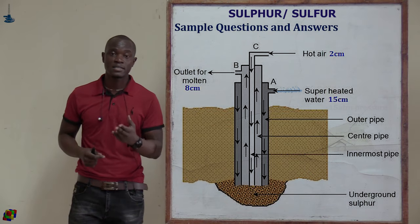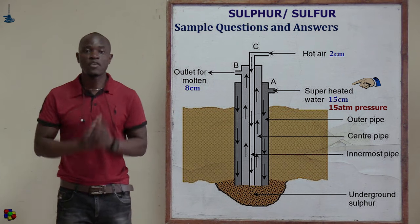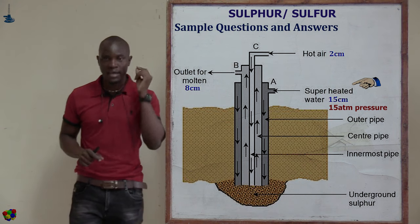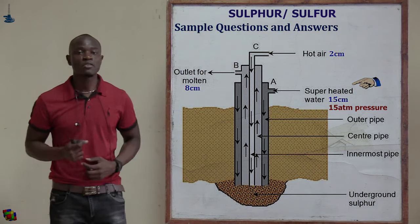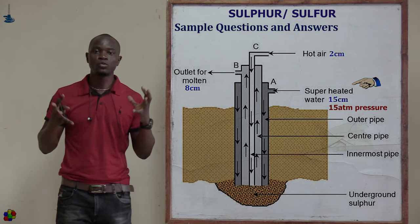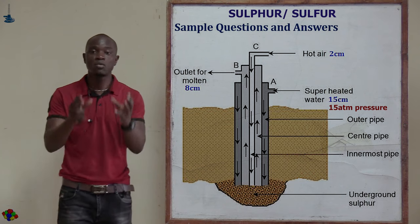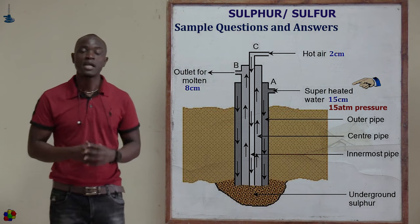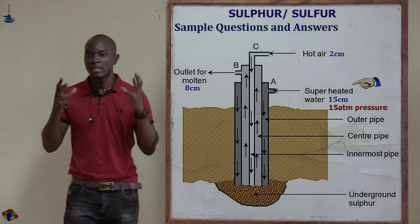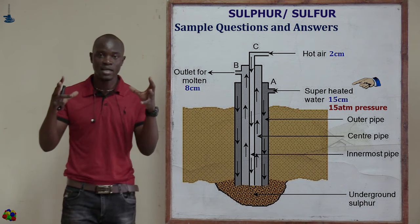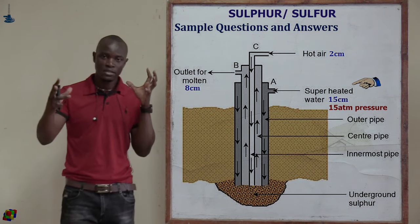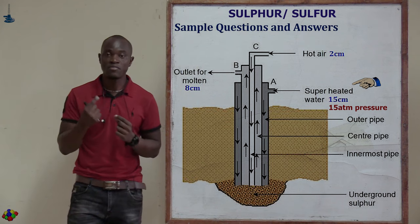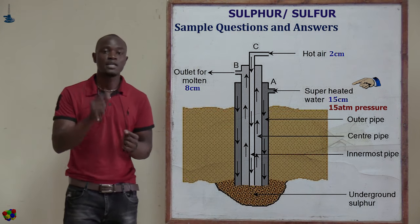The second question asks: what is the function of the high pressure in the outermost pipe? The function of the high pressure is to maintain water in liquid form. Remember, water boils at 100 degrees Celsius, but here water is at 170 degrees Celsius, so the high pressure forces the water molecules together to remain as a liquid and not a gas.